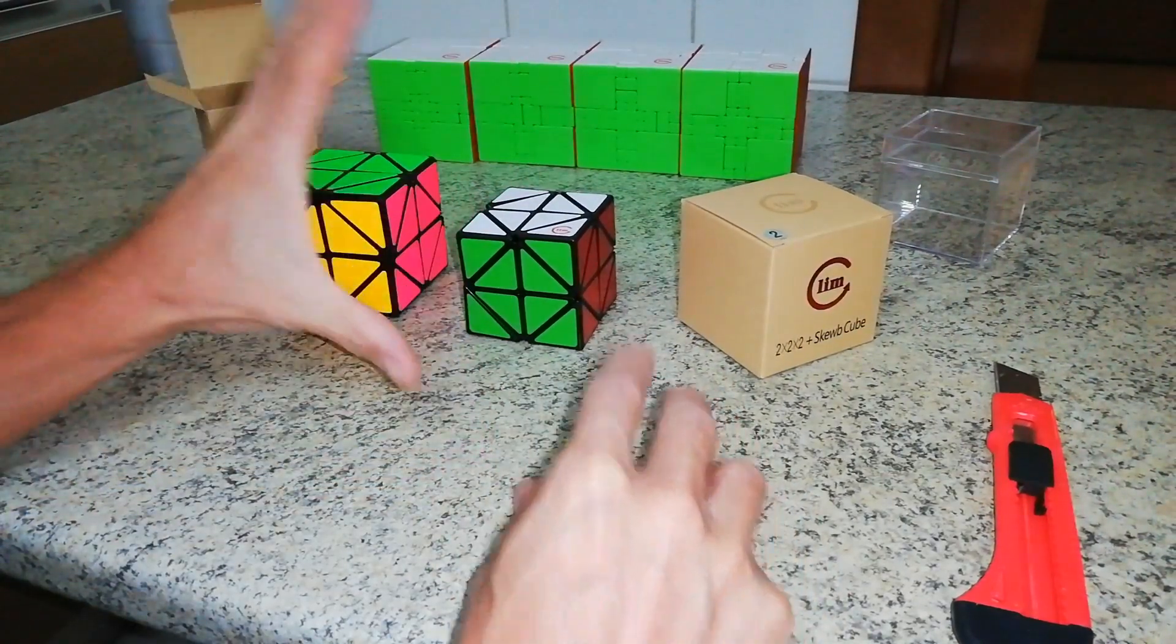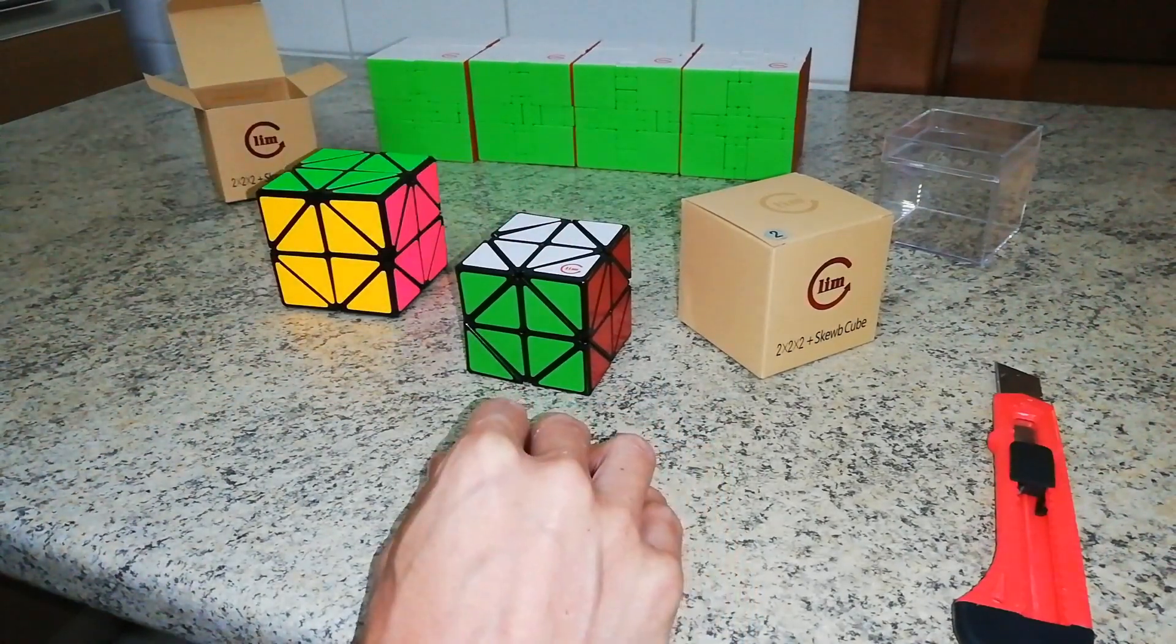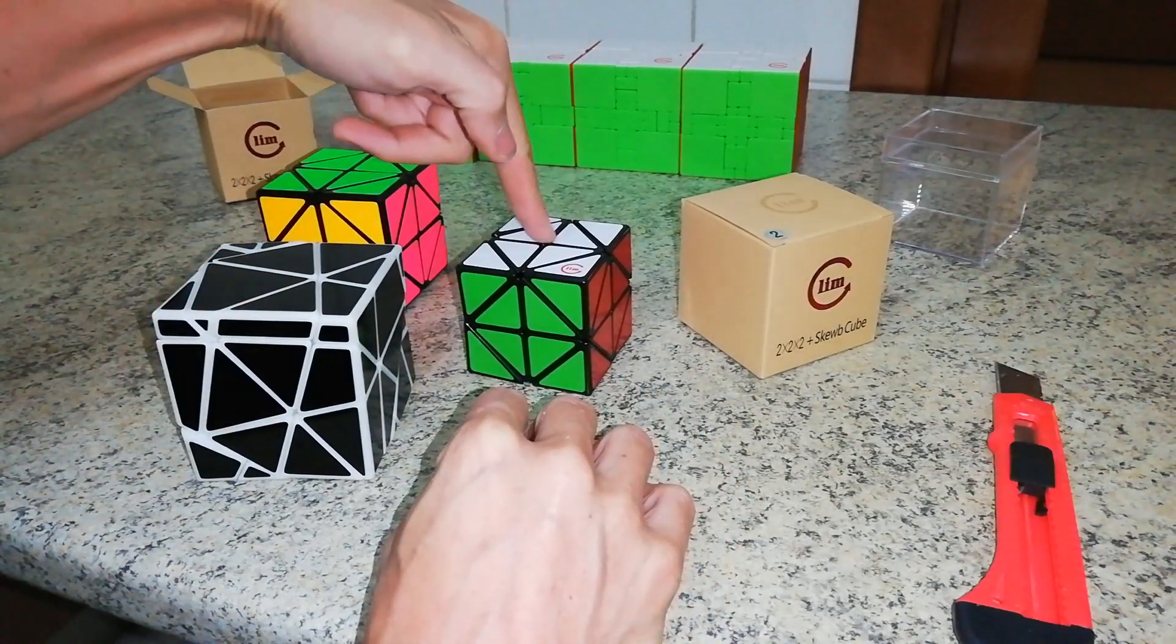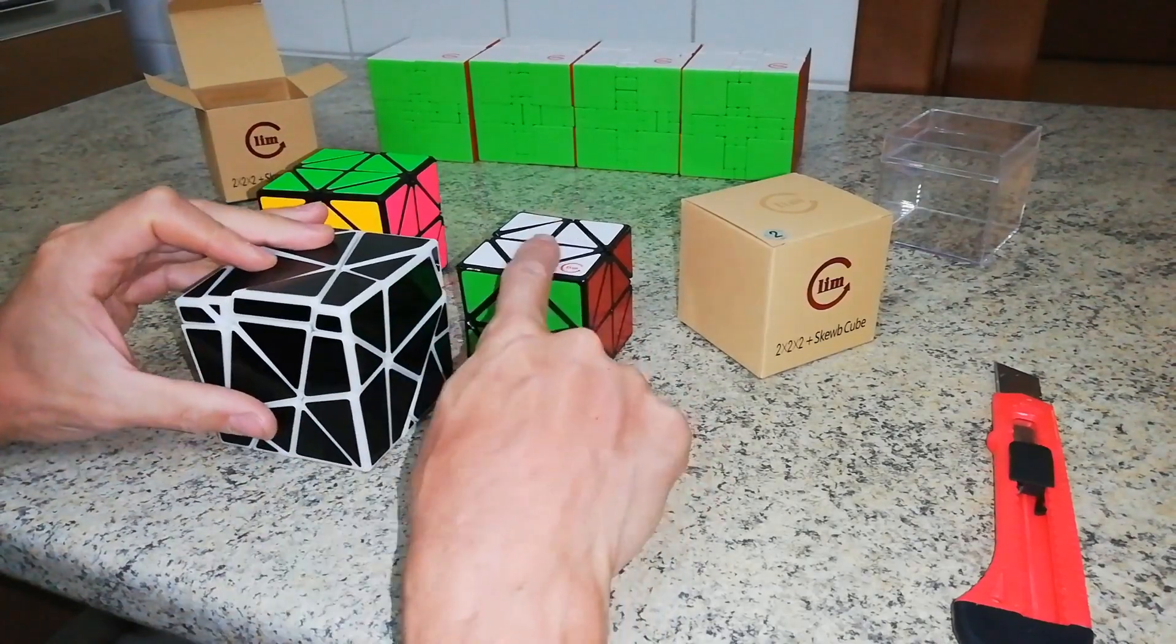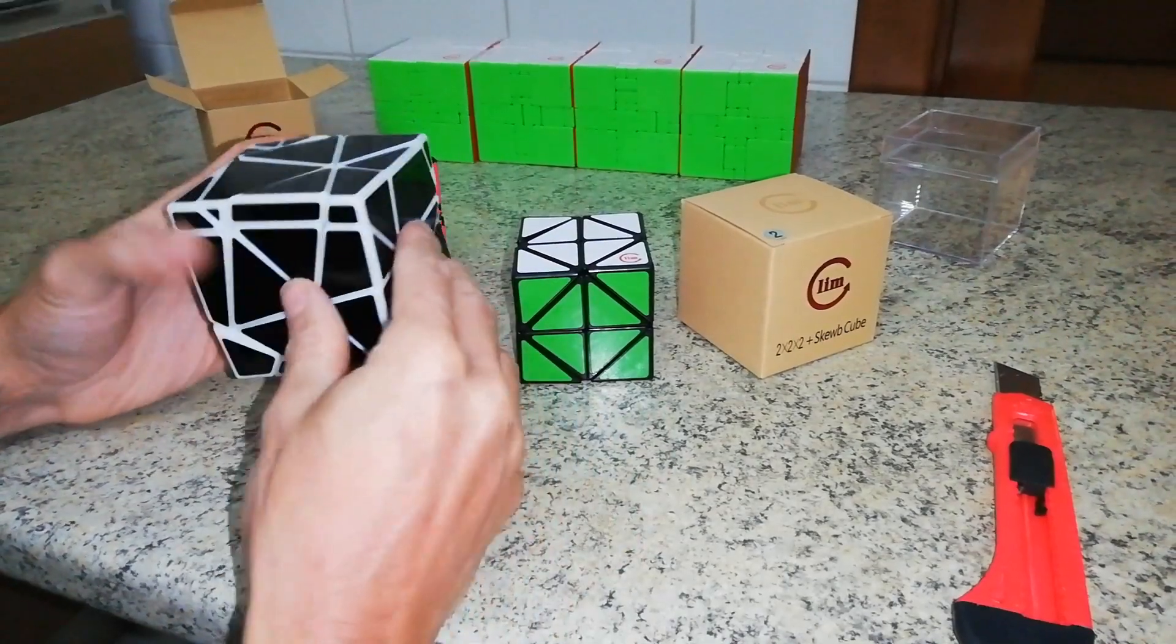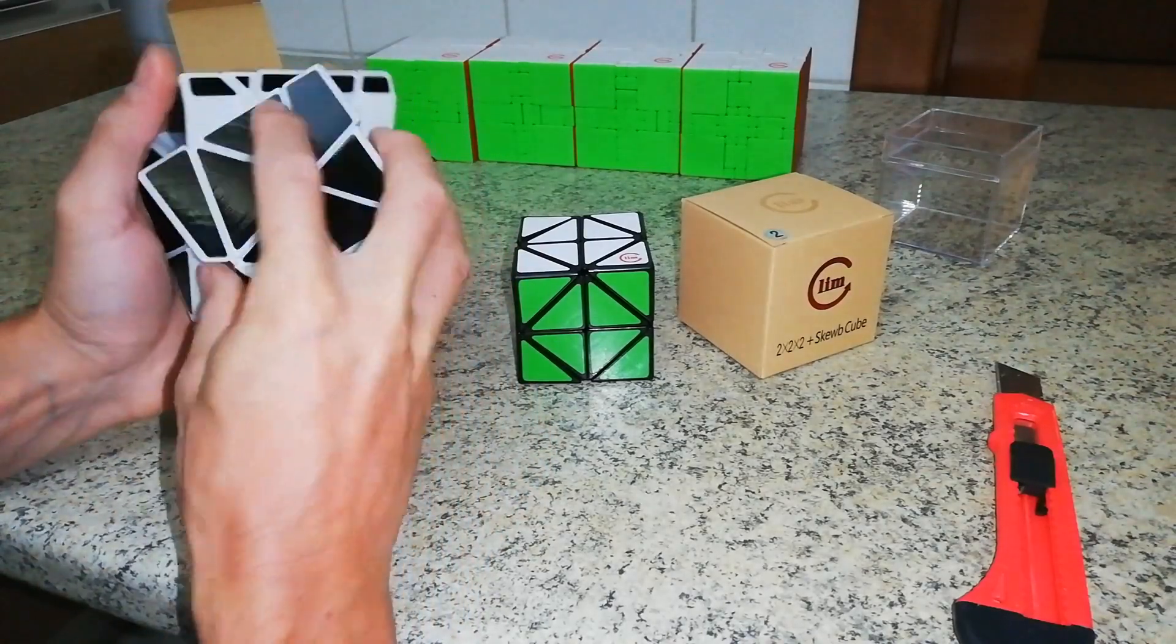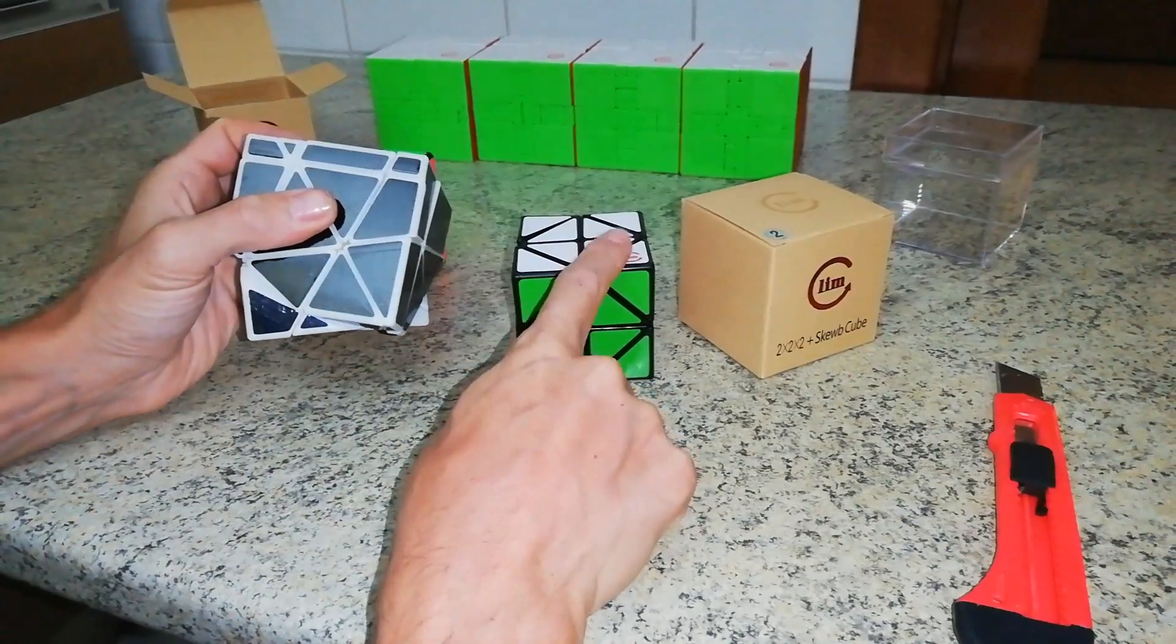And we have also received from Limbcube another version of this puzzle that was this one here. This puzzle is called Super Z, while this one, that is the ghost modification of this puzzle, is called Ghost Z. So we have the same concept with this puzzle, where we have to place in line these pieces. And then we can rotate as a 2x2x2, like this puzzle.